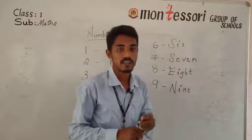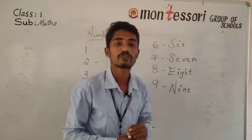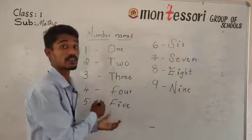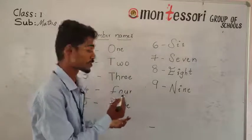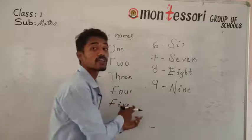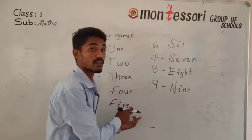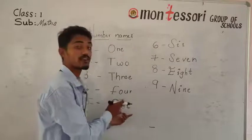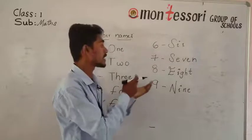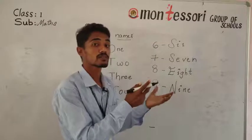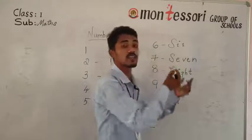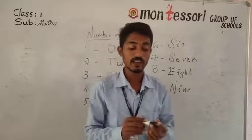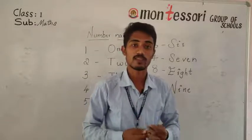If any teacher asks the number name of five, you should not write the number — write F-I-V-E. If they ask seven, say S-E-V-E-N. All of you have understood? Thank you, children. We'll meet in the next class. Thank you.